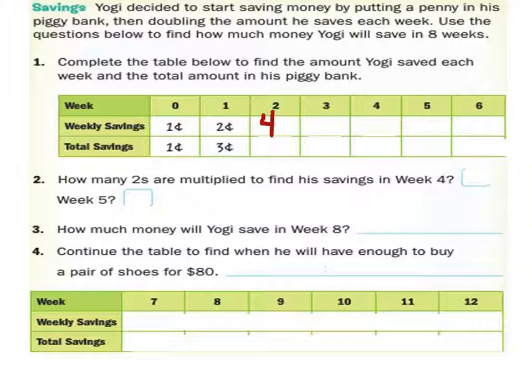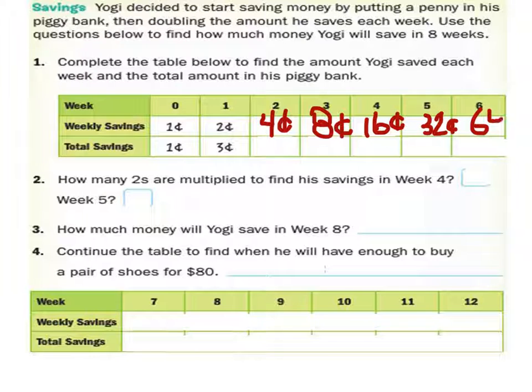Four cents. Week three, eight cents. Four, 16 cents. 32 cents. And finally, 64 cents.